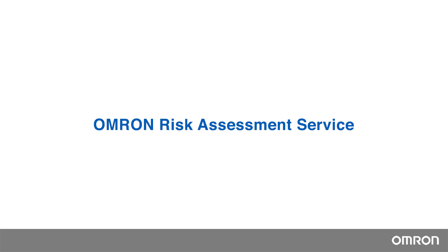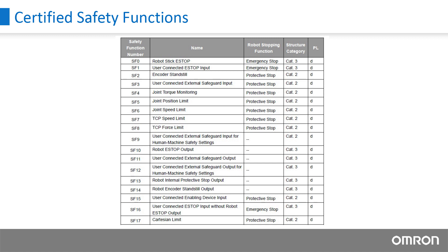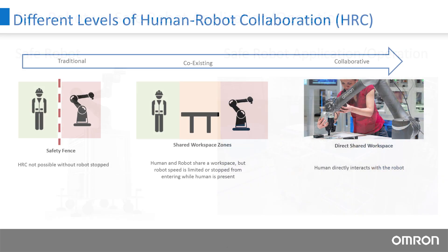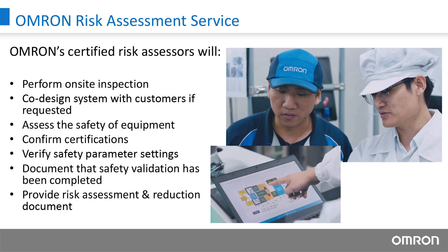As discussed throughout this video, the OMRON TM robots are designed to comply with all necessary safety standards so the robot is considered safe. However, the goal is to achieve a safe robot application or operation, which requires the consideration of more than the robot itself. It is important to understand the difference between a safe robot and a safe robot application and operation. As every robot application is unique, users must go through a complete risk assessment to guarantee that the application is safe. For customers that are not familiar with this process, OMRON provides an on-site risk assessment service to ensure the safe operation and successful efficiency gains and productivity boost of your collaborative robotic application.